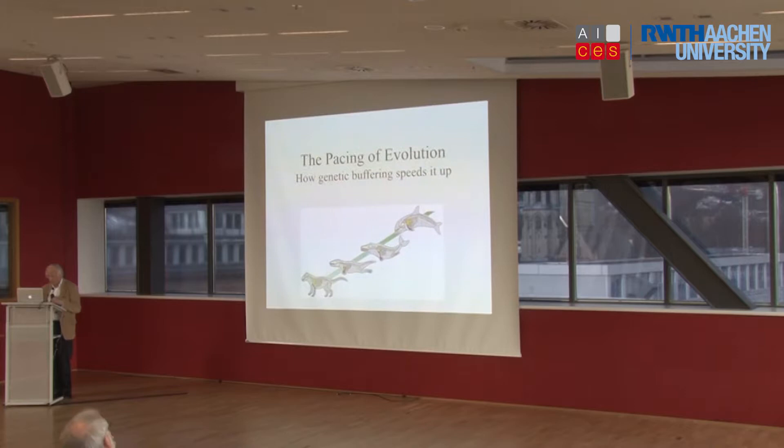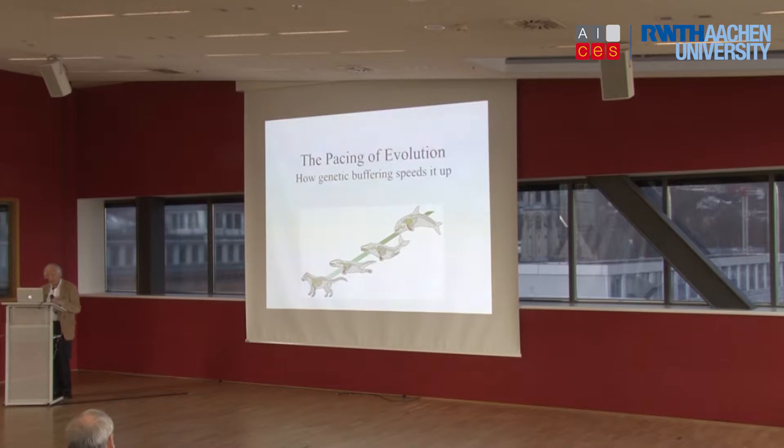So we now come to the pacing of evolution. Was it, as the original formulators of Darwinism thought, simply random gradual mutation in the genome followed by slow natural selection? Or was it, as people like Eldridge and Gould thought, subject to sudden spurts in evolution as the geological record seems to show?